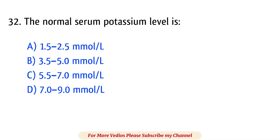Question number 32. The normal serum potassium level is? The right answer is option B: 3.5 to 5.0 millimoles per liter.